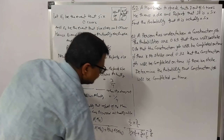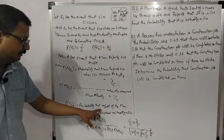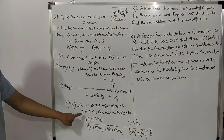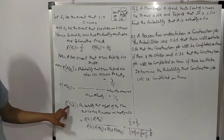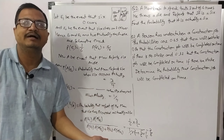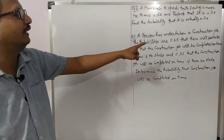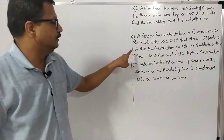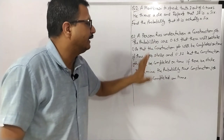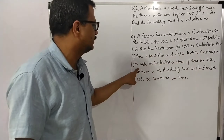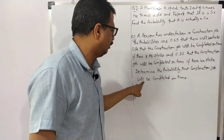Question 3: The probabilities are 0.65 that there will be a strike, 0.80 that the construction job will be completed on time if there is no strike, and 0.32 that the construction job will be completed on time if there is a strike. Determine the probability that the construction job will be completed on time.